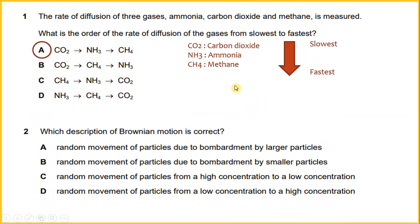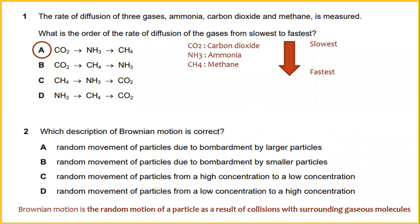Which description of Brownian motion is correct? Brownian motion is the random movement of a particle as a result of collision with surrounding gas molecules. The answer is B.